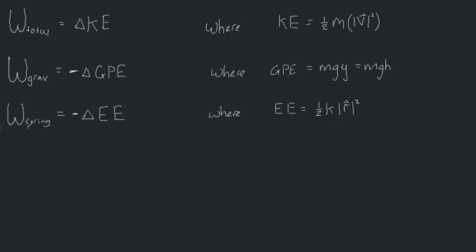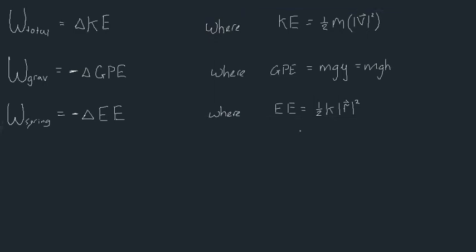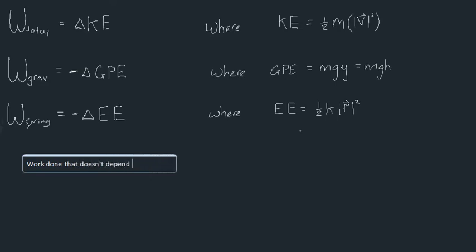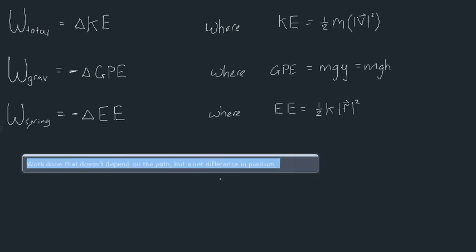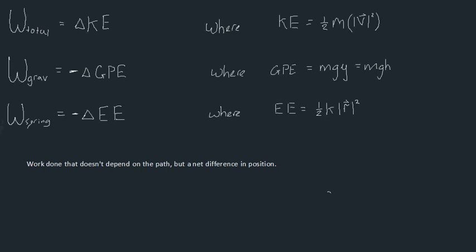Work done by conservative forces is work that doesn't depend on the path taken, but rather a net difference in position. A good example is the work done by gravity — if you have a ball and throw it up along any type of path, all we need to know to work out the change in gravitational potential energy is the difference in height. In other words, the path is irrelevant. So if an object goes around a closed path and returns to its initial position, no work has been done.